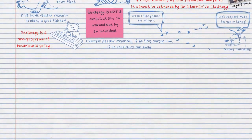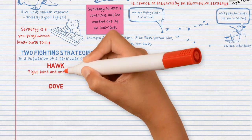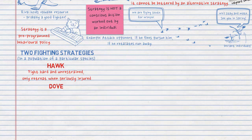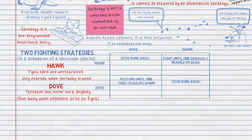In applying this to aggression, we can think of two sorts of fighting strategies in a population: number one, a hawk strategy, or number two, a dove strategy. Dawkins points out that the names have no connection with conventional human usage, as doves are rather aggressive birds. Hawks fight hard and unrestrained, and only retreat when seriously injured. Doves threaten, but never hurt anybody. If a hawk fights a dove, the dove quickly runs away and does not get hurt. However, if a hawk fights a hawk, they fight until one of them is seriously injured or dead. If dove meets dove, nobody gets hurt and they posture at each other until one of them tires or backs down. We assume individuals only find out if a rival is a hawk or a dove when they fight and cannot tell in advance and have no memory of past fights.